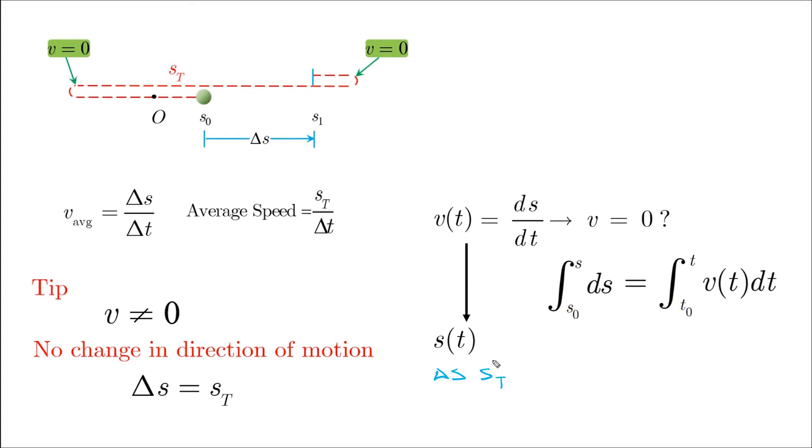On the other hand, if s of t is given in the problem and you're required to find the displacement and distance traveled, then you first check for the v equals to zero condition by taking the derivative of s of t.